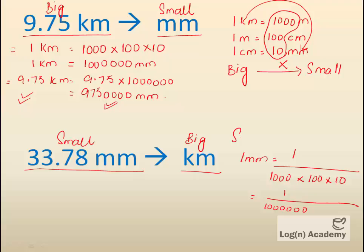We divide by 1 over 1,000,000 km. So 33.78 mm equals 33.78 x 1 over 1,000,000.